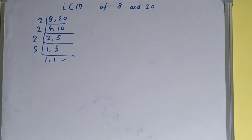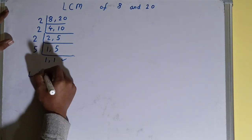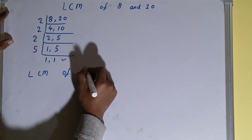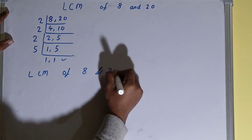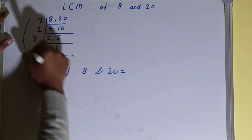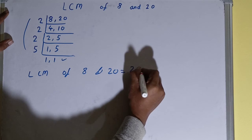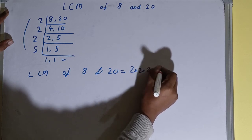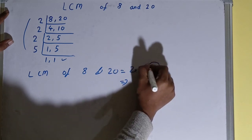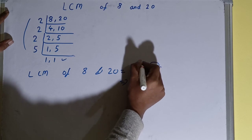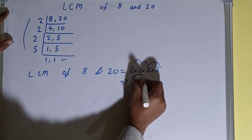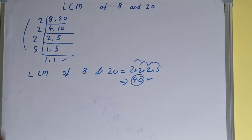And we need to do one last thing: that is, LCM of 8 and 20 is equal to multiply whatever you have on the left-hand side. That is 2 times 2 times 2 times 5. Your answer will be 5 to the 10, 10 to the 20, 20 to the 40. Your answer will be 40, or your LCM will be 40.